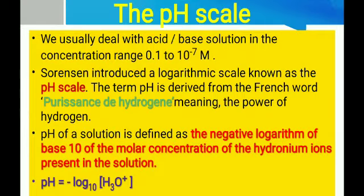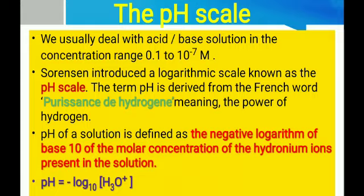The pH scale — what is the pH scale? We can determine the strength of an acid or base, whether it is acidic, basic, strong acid, or strong base, by using the pH scale. We already know that pH 7 is neutral, below 7 is acidic, and above 7 is basic. Now we are going to see what the pH scale is and how we can calculate the pH of a solution.